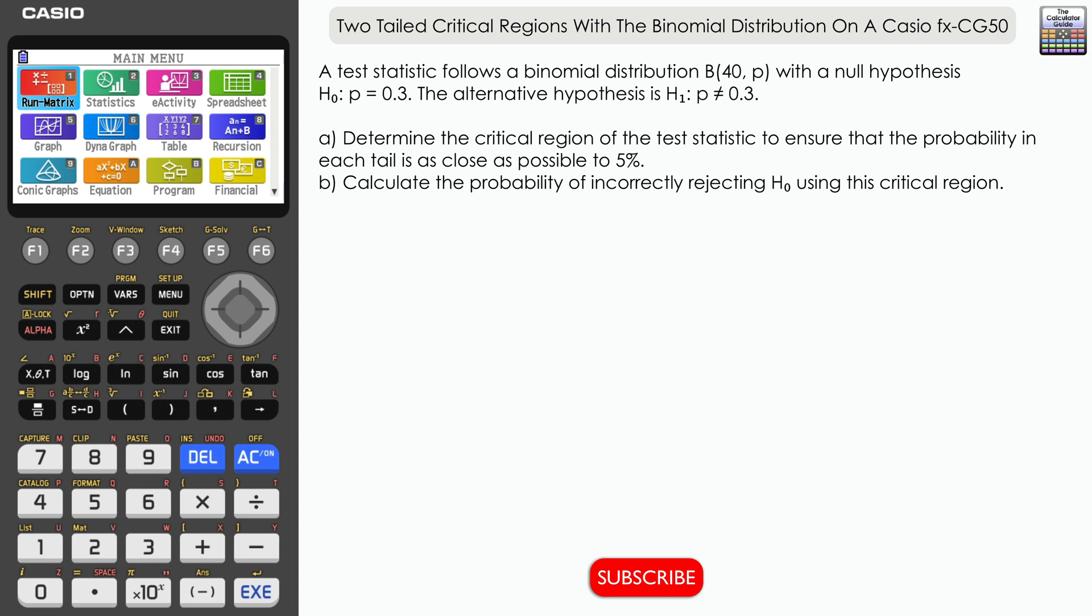Let's take a look at the question. A test statistic follows a binomial distribution. We have n, a number of trials of 40, and a probability p with a null hypothesis H₀: p = 0.3 and an alternative hypothesis H₁: p ≠ 0.3.